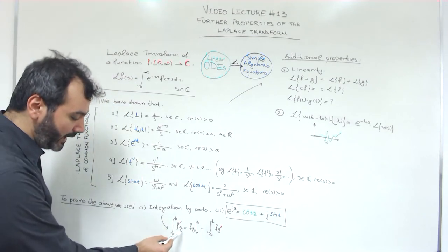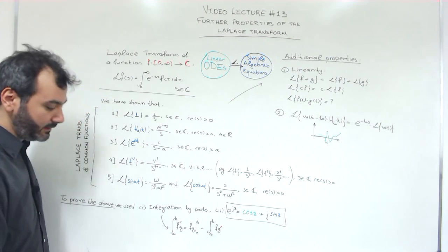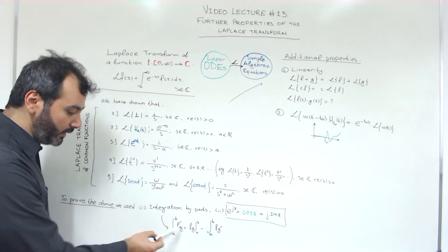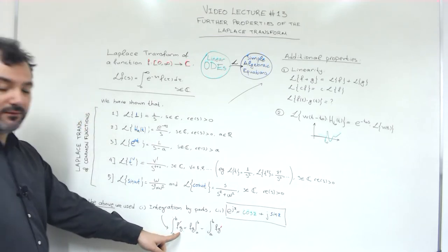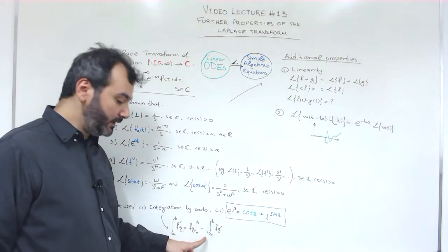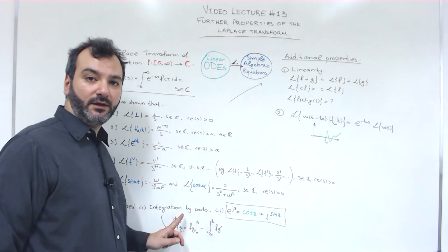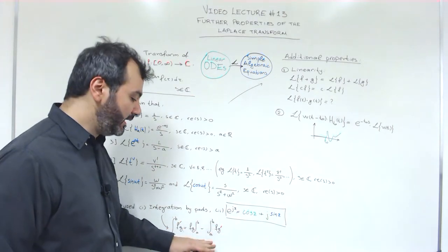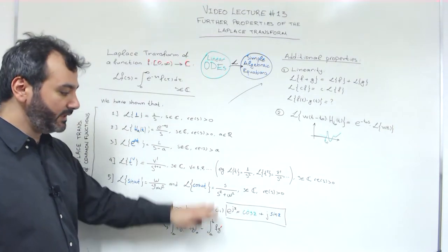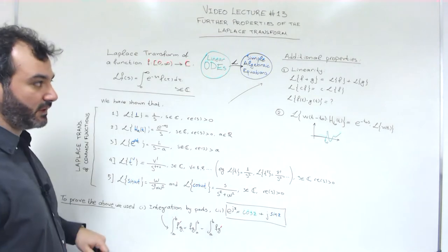Integration by parts is this formula: when we integrate from a to b the product of two functions, one of which is written as a derivative, we can write this as fg from a to b minus the integral of fg prime. It's like moving the derivative from one function to the other. We used this to facilitate the computations in some of these examples, and derived these Laplace transforms.